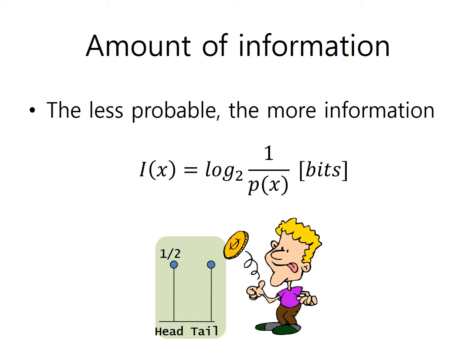In the case of flipping a coin, the probability of getting a head and a tail are both 0.5 respectively. Then, by using this equation, you put 0.5 here, and you get 1 bit. So the amount of information is both 1 bit.